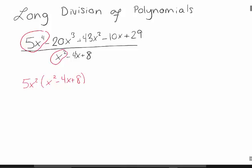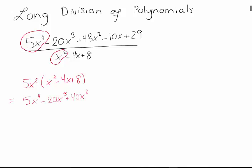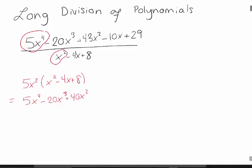Let's multiply this through and see what it looks like. This little polynomial here — 5x to the 4th minus 20x cubed plus 40x squared — is a nice multiple of my denominator. So if I could separate that out from the top, I could just cancel. So let's separate it out from the top.